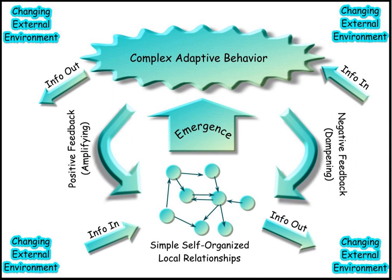A complex adaptive system is a system in which a perfect understanding of the individual parts does not automatically convey a perfect understanding of the whole system's behavior. The study of complex adaptive systems, a subset of nonlinear dynamical systems, is highly interdisciplinary and blends insights from the natural and social sciences to develop system-level models and insights that allow for heterogeneous agents, phase transition, and emergent behavior.